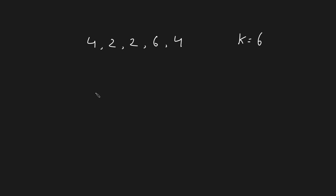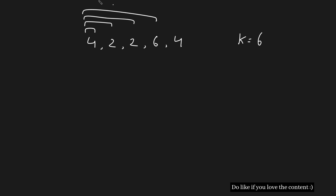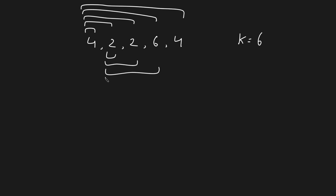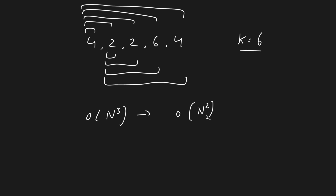In the brute force, you generate all subarrays, compute the XOR of each, and if that XOR equals m you increment a count. The time complexity is O(n³) for the naive solution, or O(n²) with some optimization, and space complexity is O(1). But the interviewer won't be happy with an O(n²) solution, so you need to optimize.